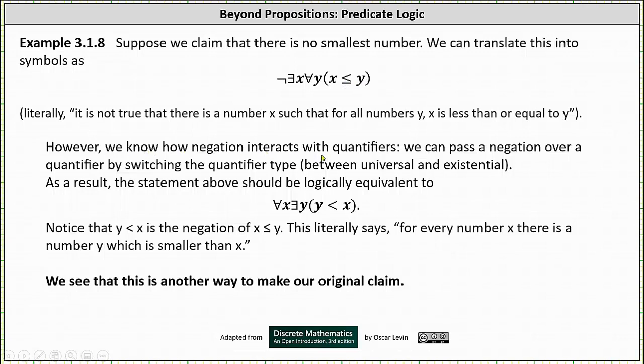However, we know how negation interacts with quantifiers. We can pass a negation over a quantifier by switching the quantifier type. As a result, the statement above can be written as shown below. The negation passes over the quantifiers, changing the quantifier types.